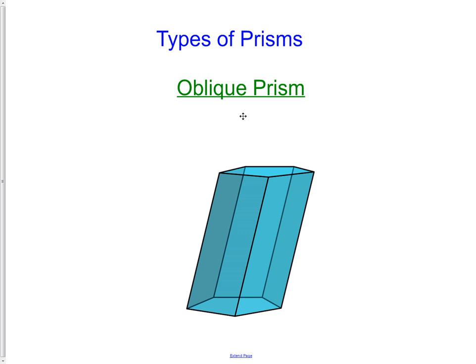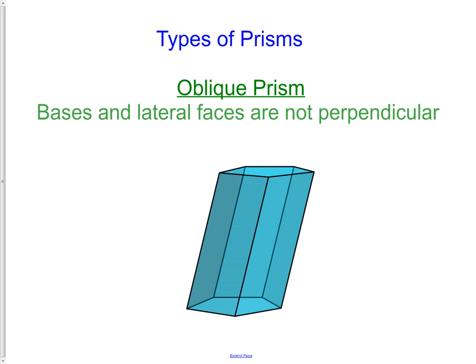Then we have our oblique prism. In which the bases and the lateral faces are not perpendicular. We do not have right angles in these corners. They are just angles. They are not right angles. That's the end of this lesson. Make sure if you have any questions, please bring them in and I'll help you out.